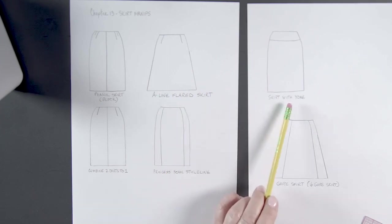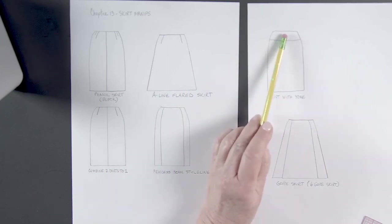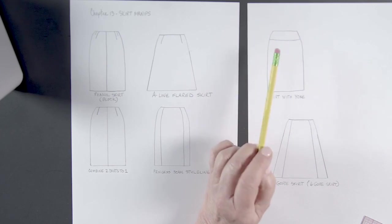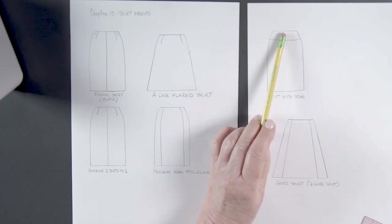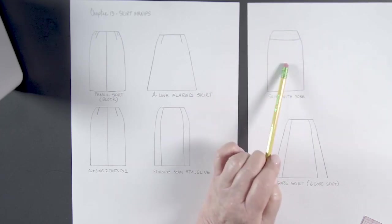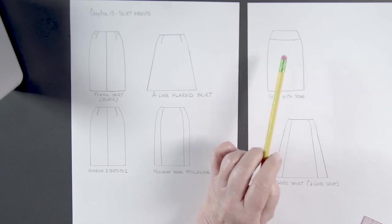Here is a skirt with a yoke. We call this a yoke. And this would be like yoke front. And this is skirt front. We're going to do one of those manipulations.